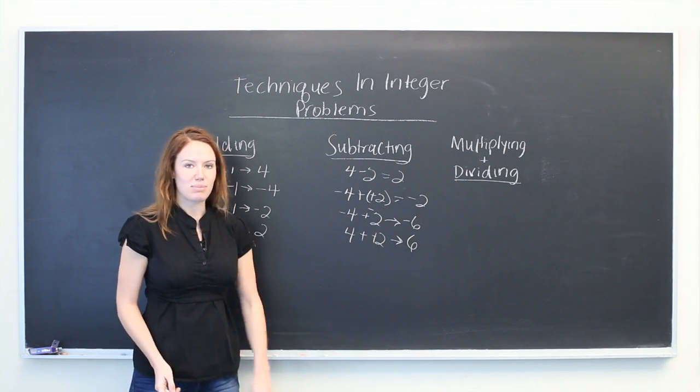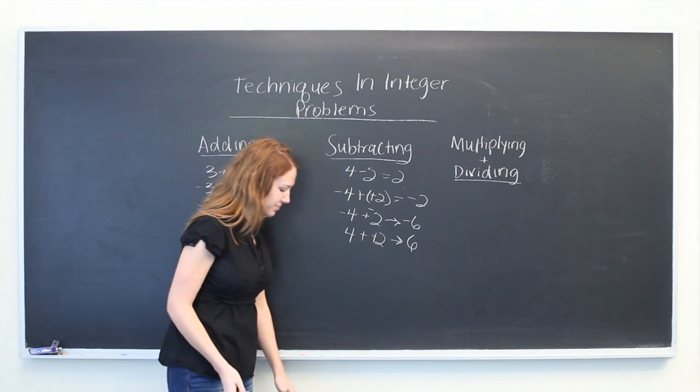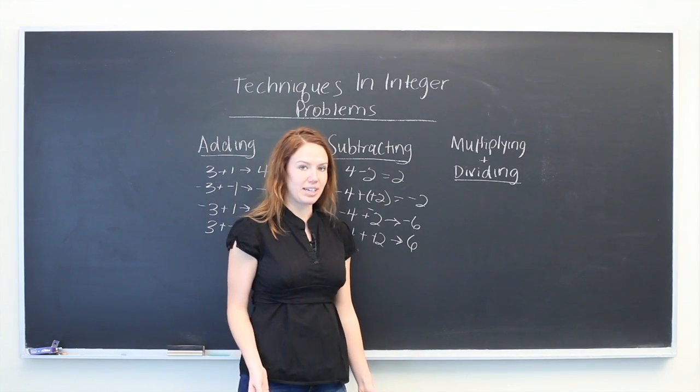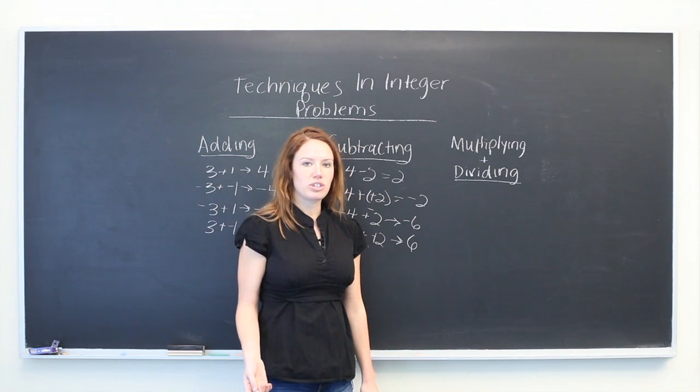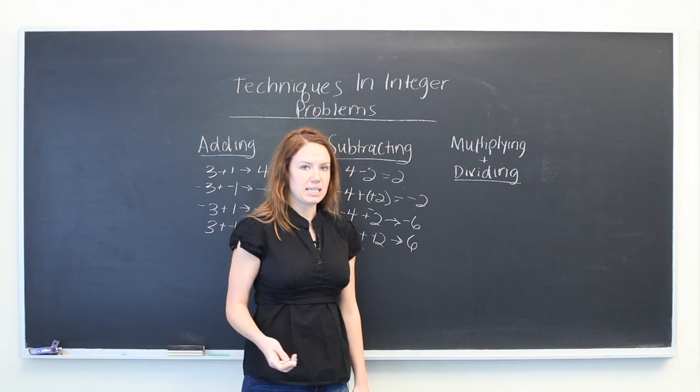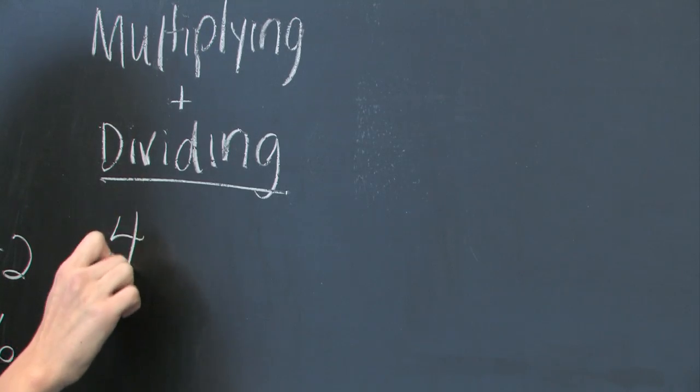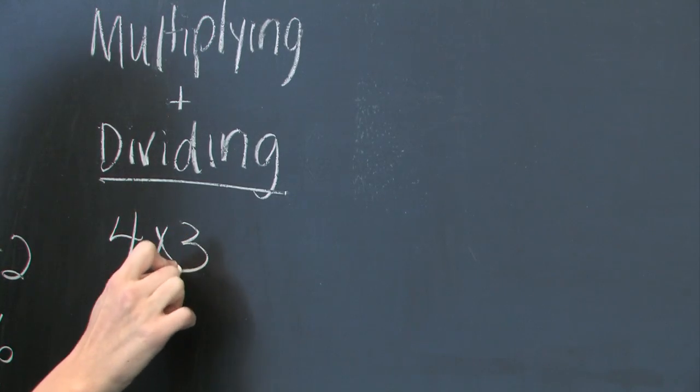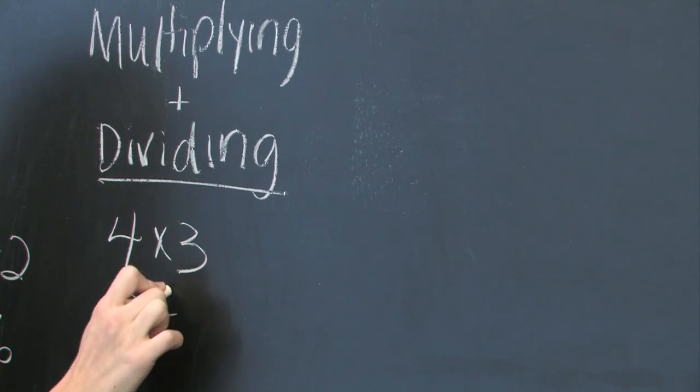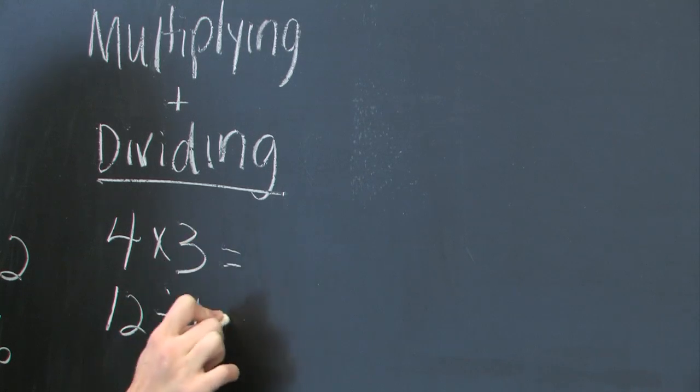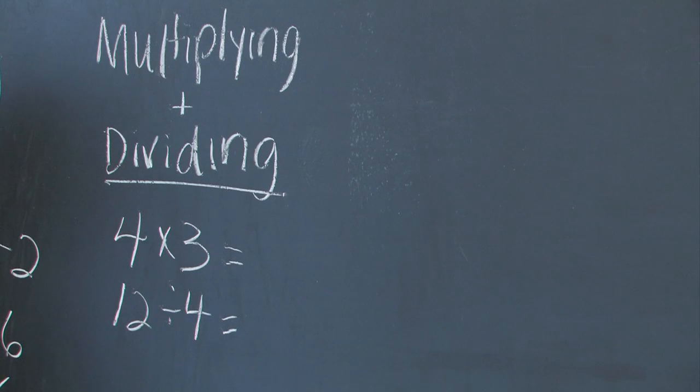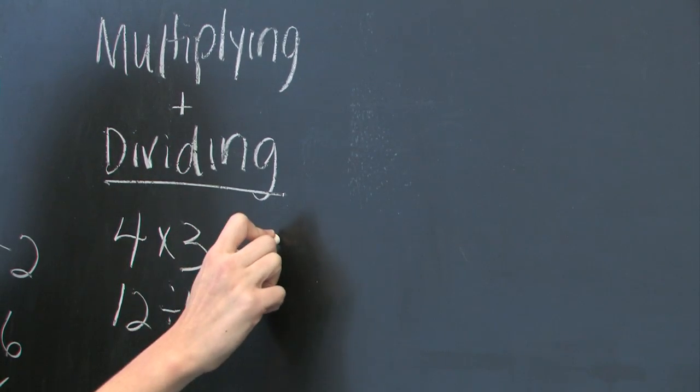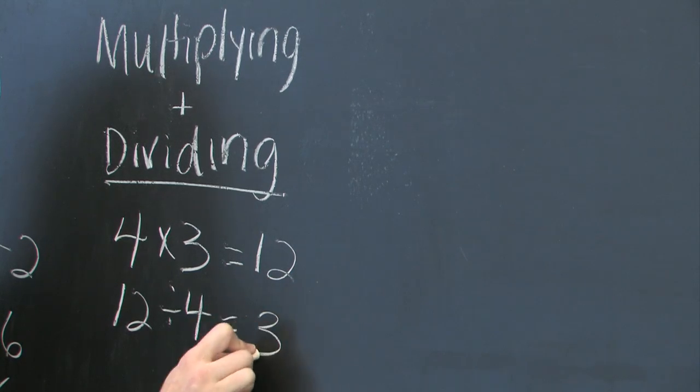Moving on to multiplying and dividing. Fortunately, the rules for both of these are the same. If you're multiplying and dividing two integers where the signs of both integers are the same, so 4 times 3 or 12 divided by 4, you just multiply as if they were both positive. So here you have 12 and here you have 3.